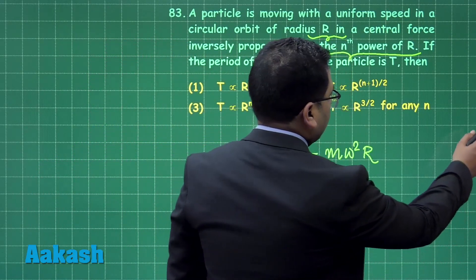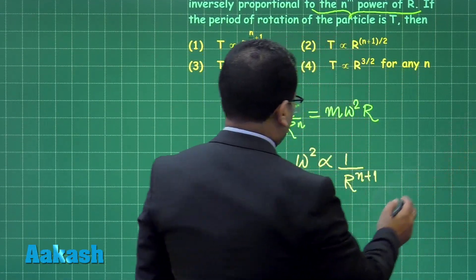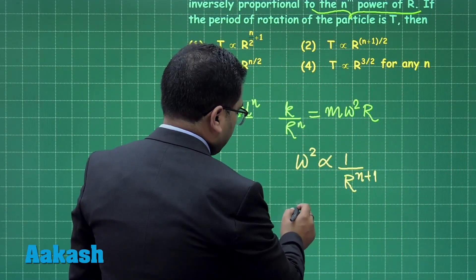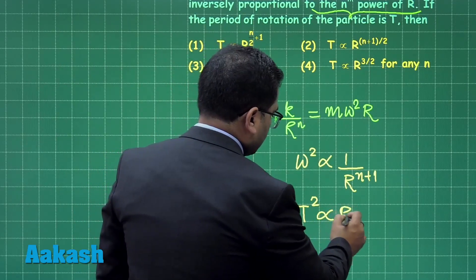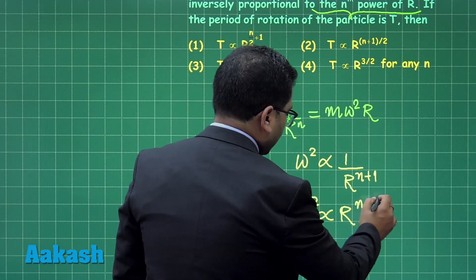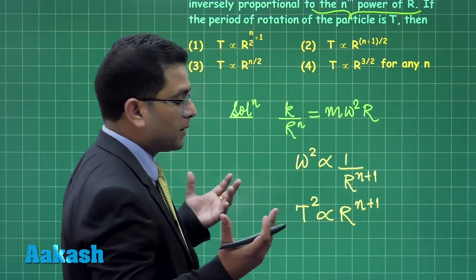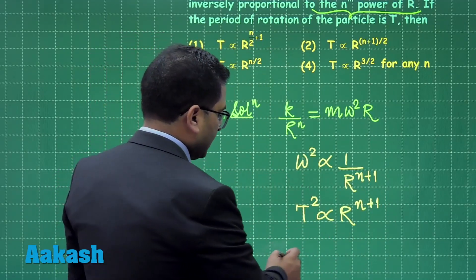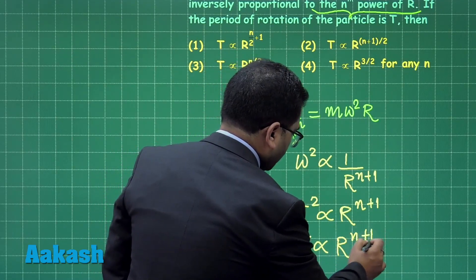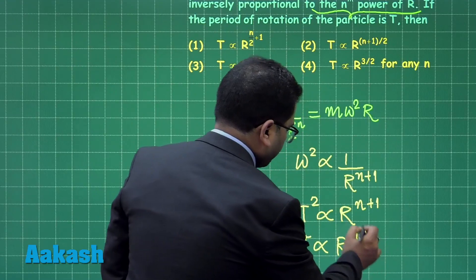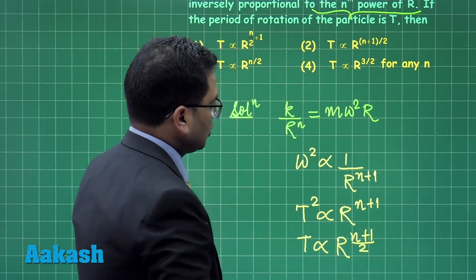This is omega square and all I require is to calculate how time depends and t square would be directly proportional to r raised to the power n plus 1 because omega equals to 2 pi by t, a straightforward one. And the time is going to be r raised to the power n plus 1 divided by 2.